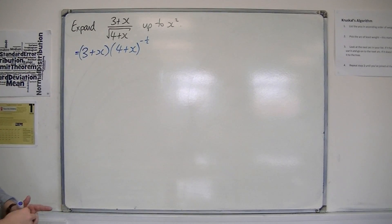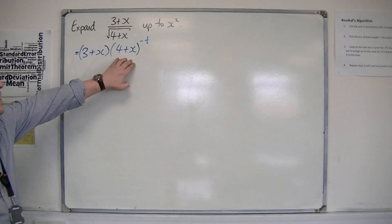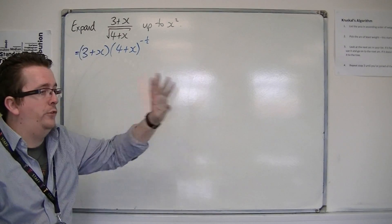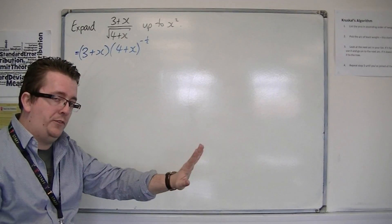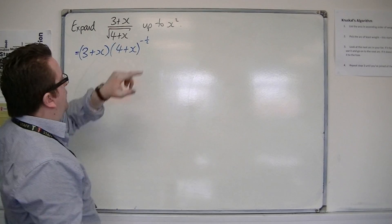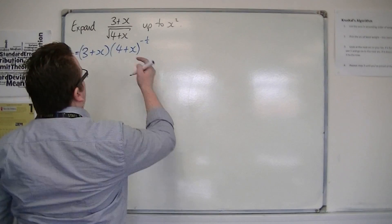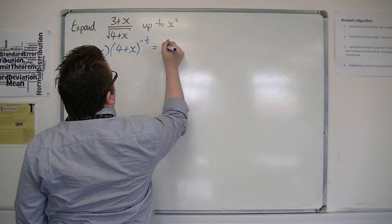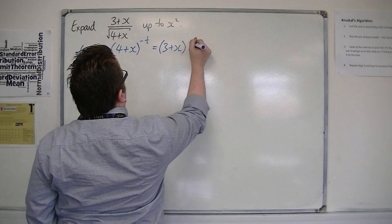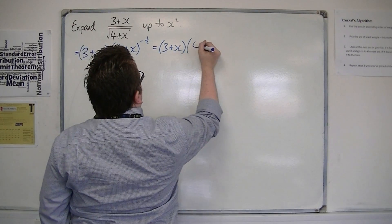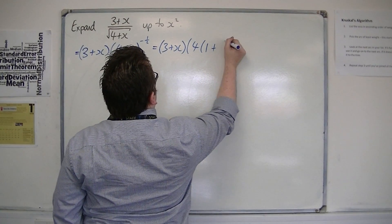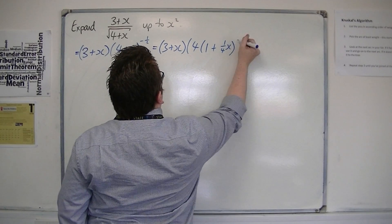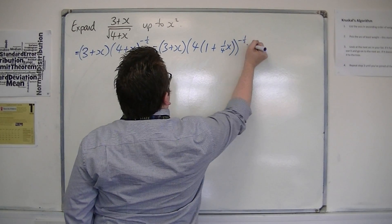Now, we can't work with the binomial expansion of (4 + x) to the minus a half because it's not 1 plus or 1 minus something. So we're going to have to take the 4 outside — we need to factorise what is inside that bracket first. So we've got (3 + x) times 4 lots of (1 + x/4), all to the power of minus a half.